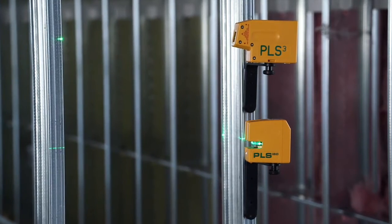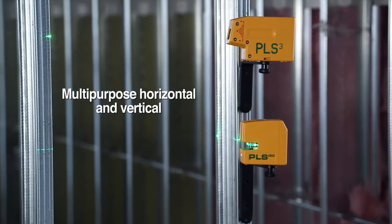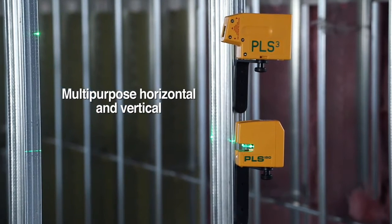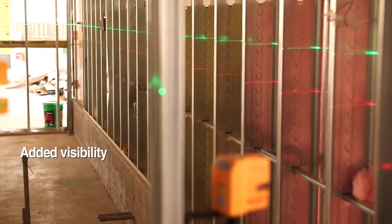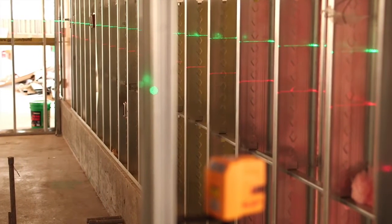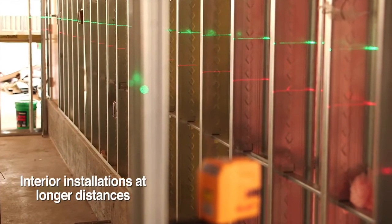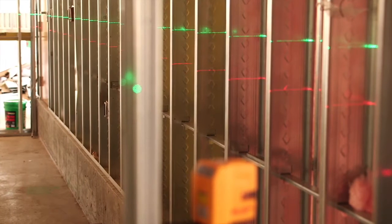The PLS 180 green beam incorporates all of the multipurpose horizontal and vertical capabilities of the popular PLS 180 red beam with the added visibility of green beam. Designed for demanding interior installations at longer distances or interior projects with streaming sunlight.